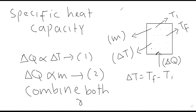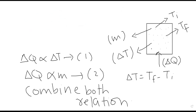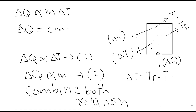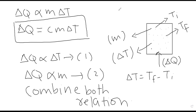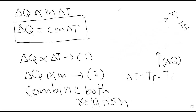Agar hum dono relations ko combine karein, we get that delta Q is directly proportional to mass m and also directly proportional to change in temperature delta T. Ab proportionality ki symbol hatane ke liye hum ek constant dete hain, aur woh constant c kehlaata hai. So delta Q equals c m delta T. Here c is called the Specific Heat Capacity.